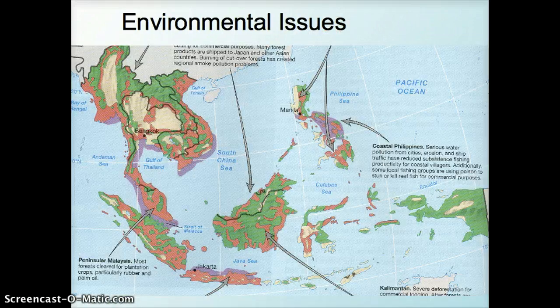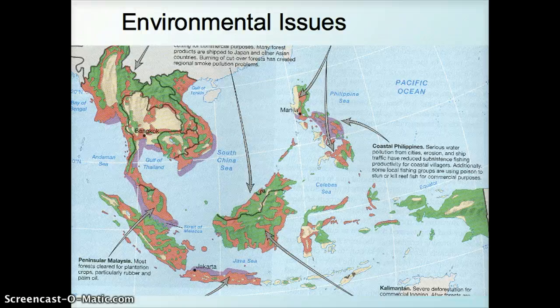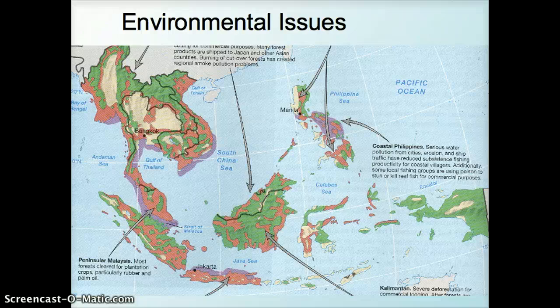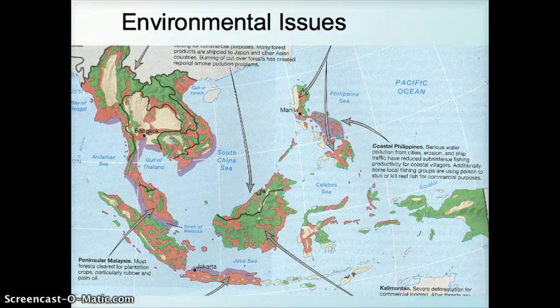With the increase of plantation-style agriculture and the extraction of timber, there are a lot of environmental issues throughout Southeast Asia, particularly deforestation in places like peninsular Malaysia and Indonesia. There's also serious water pollution from cities, erosion, and ship traffic in places like Indonesia, which has been especially detrimental for folks who rely on the ocean for fish as a resource.